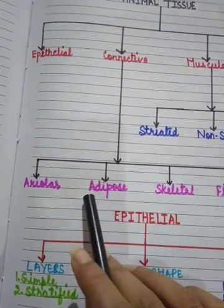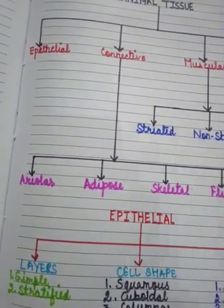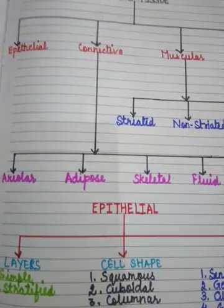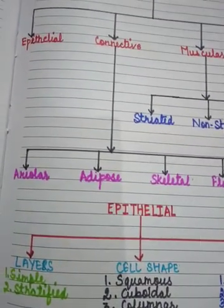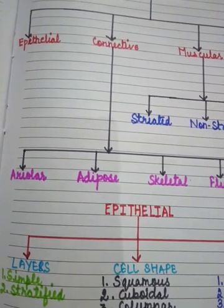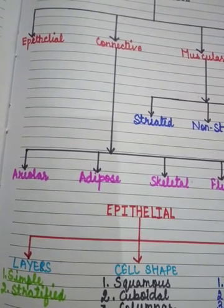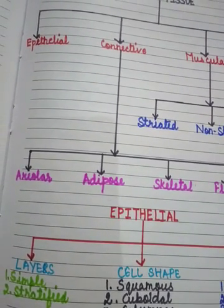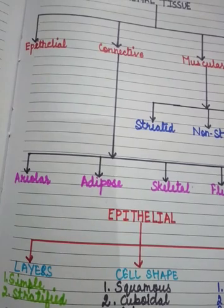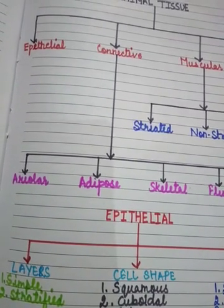Next is adipose tissue, also known as fat tissue. These are specialized cells that store fat. They are found in the skin, around the kidneys, and also in the eyeballs.